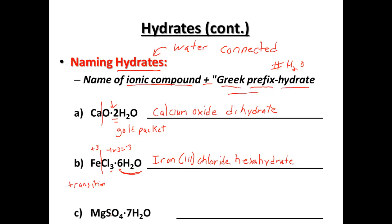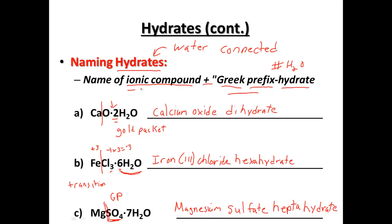Our last naming example: MgSO4 with seven H2O's. Magnesium — SO4 is a polyatomic, so from your gold packet you'll find that SO4 is sulfate. So we have magnesium sulfate. Seven from the gold packet Greek prefix is 'hepta,' then 'hydrate.' So it's magnesium sulfate heptahydrate. The pattern is: name the ionic compound, then add the Greek prefix plus the word 'hydrate,' with the water molecule attached.